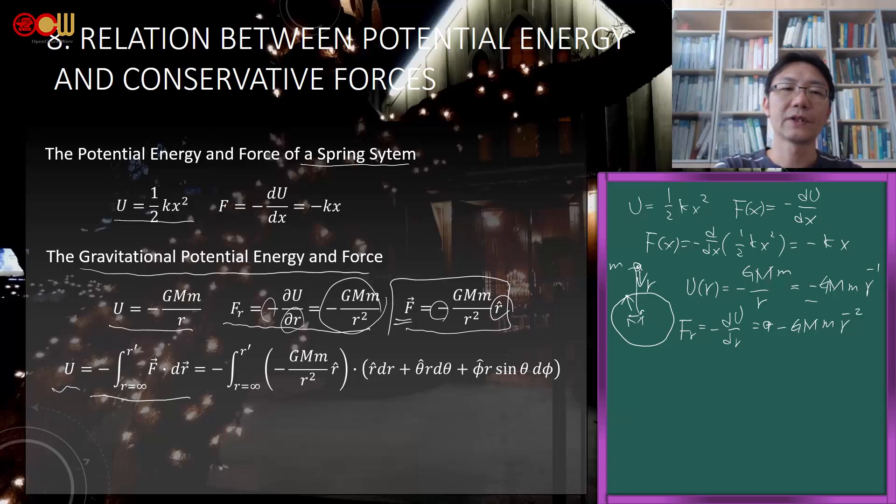Large M exerts this attractive force on small m, and small m also attracts M in that direction, both in the negative r direction. Conversely, you can integrate back: U = -W = -∫F⃗·dR⃗. The only difference is that for gravitational potential energy, we define the zero point at infinite separation. As you bring them from infinity to distance r', what is the potential energy at position r'?